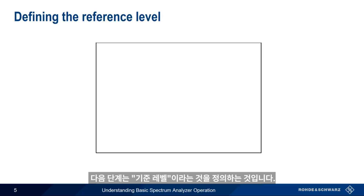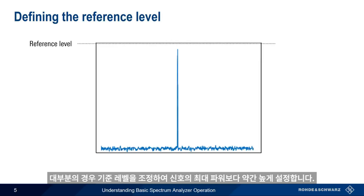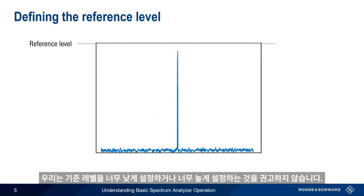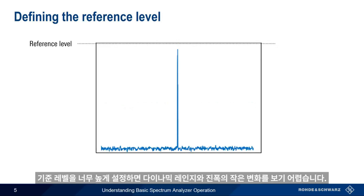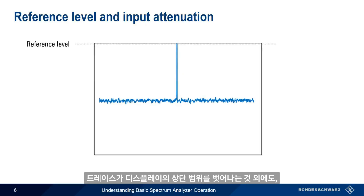The next step is defining something called the reference level. Reference level is the top edge of our display and represents the maximum expected power at the spectrum analyzer input. In most cases, we adjust our reference level so the highest level of our signal is slightly below this level. We want to avoid setting the level either too low or too high. Setting the reference level too high decreases our dynamic range and our ability to see small changes in amplitude.